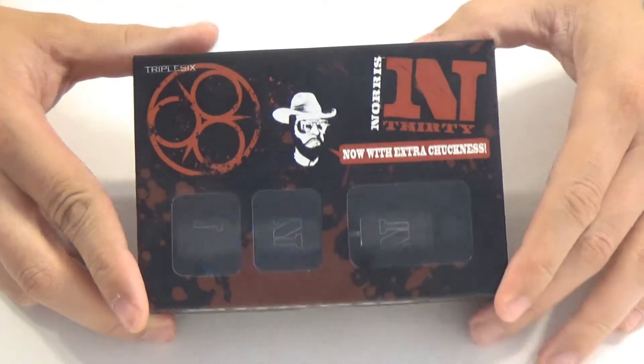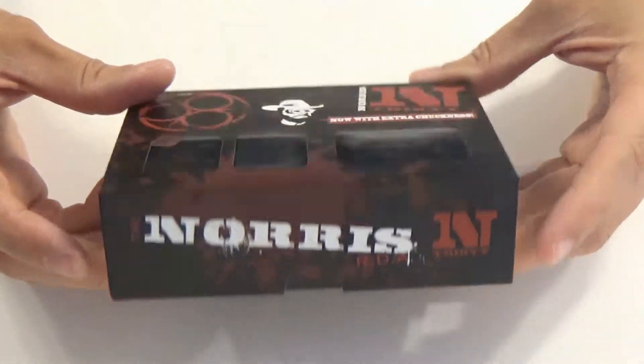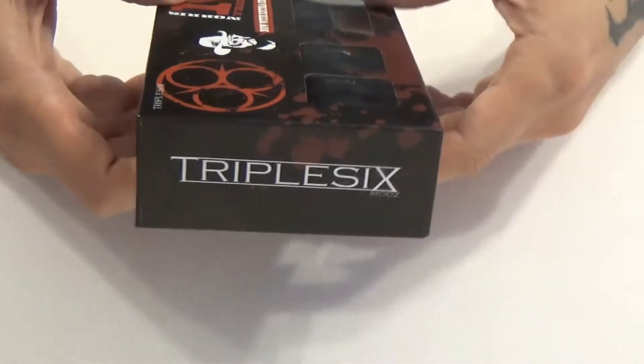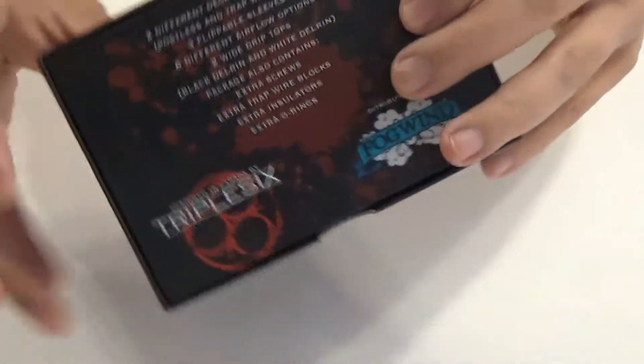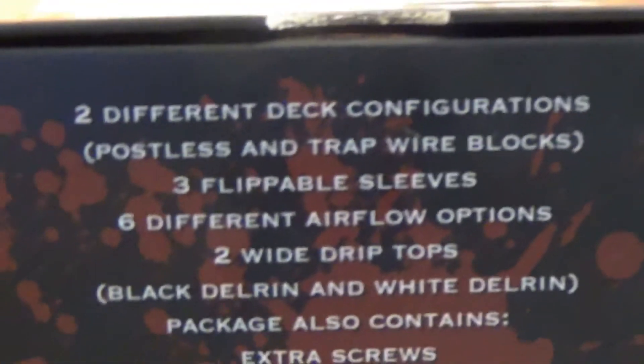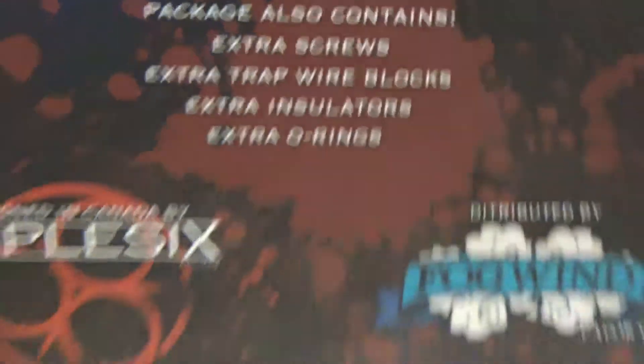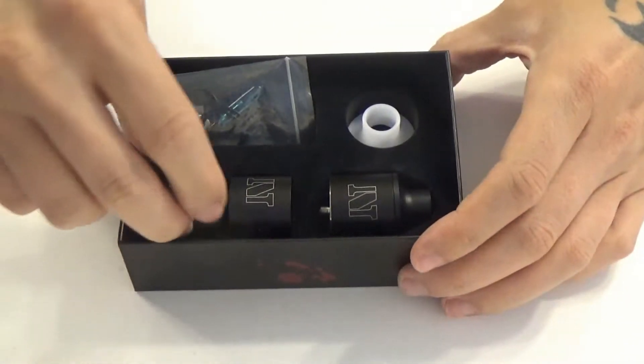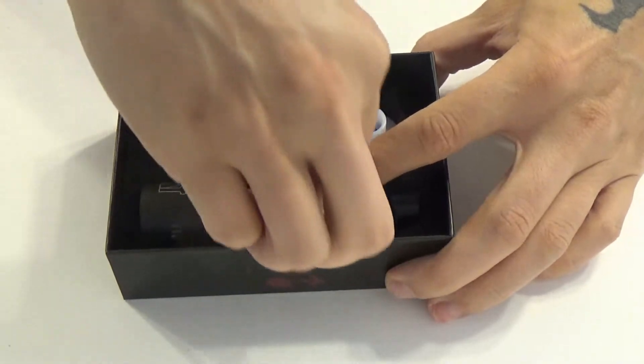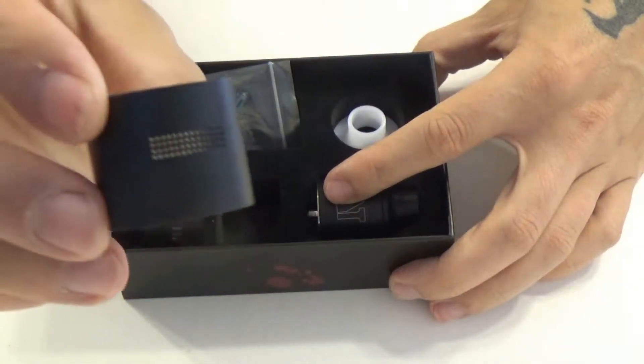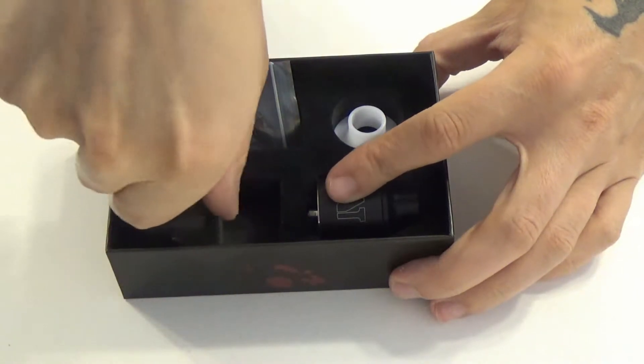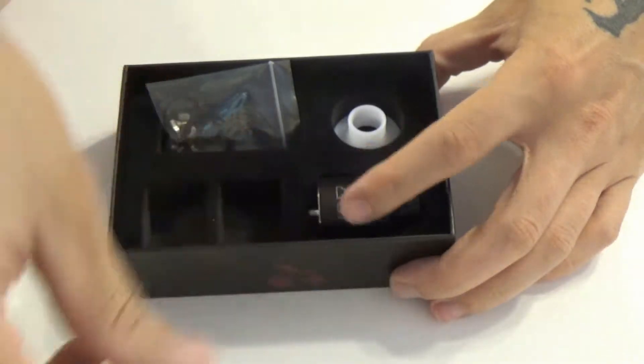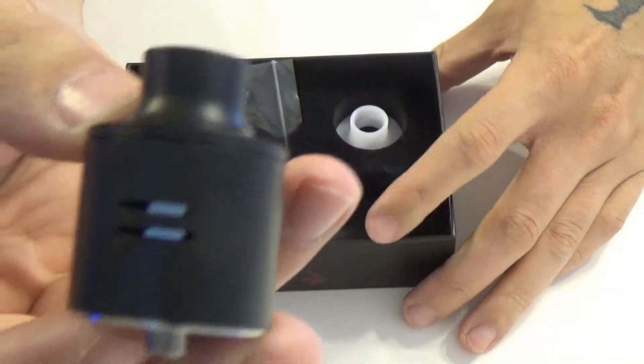Here we are up close with the Norris 30. This is the packaging it comes in and yes it does say now with extra chuckness. Opening up the box you're going to see that it does not have an adjustable airflow system per se, it does have interchangeable barrels. So you have small hole ventilation barrel, your vertical slotted barrel, and your horizontal slotted barrel.